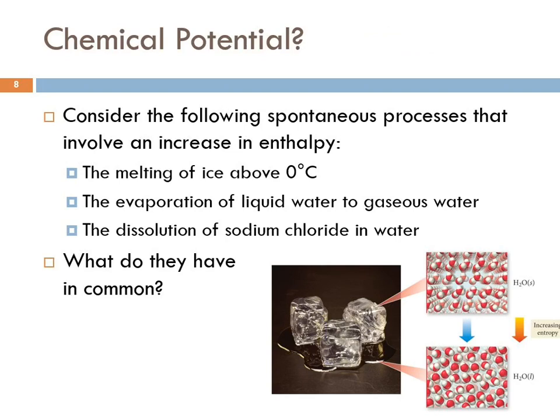What could we use for chemical potential? Let's think about some spontaneous processes that involve an increase in enthalpy — they're endothermic. The melting of ice above zero degrees Celsius: the ice is taking energy in from the surroundings and it's spontaneous. The evaporation of liquid water to gaseous water — you have a beaker of water at room temperature, but the water still evaporates. Evaporation is an endothermic process. Why does that happen spontaneously?